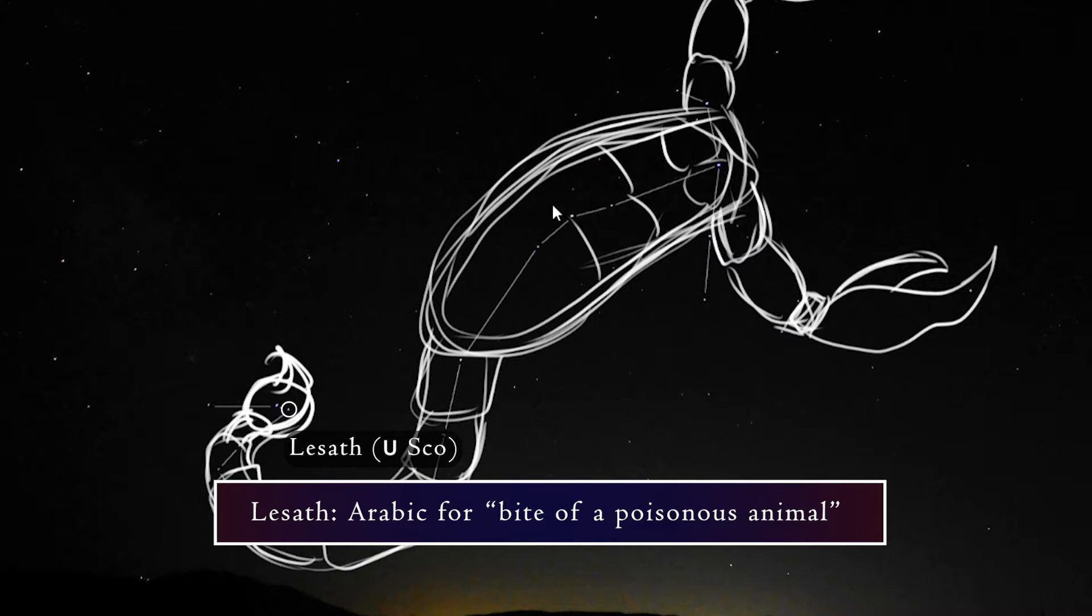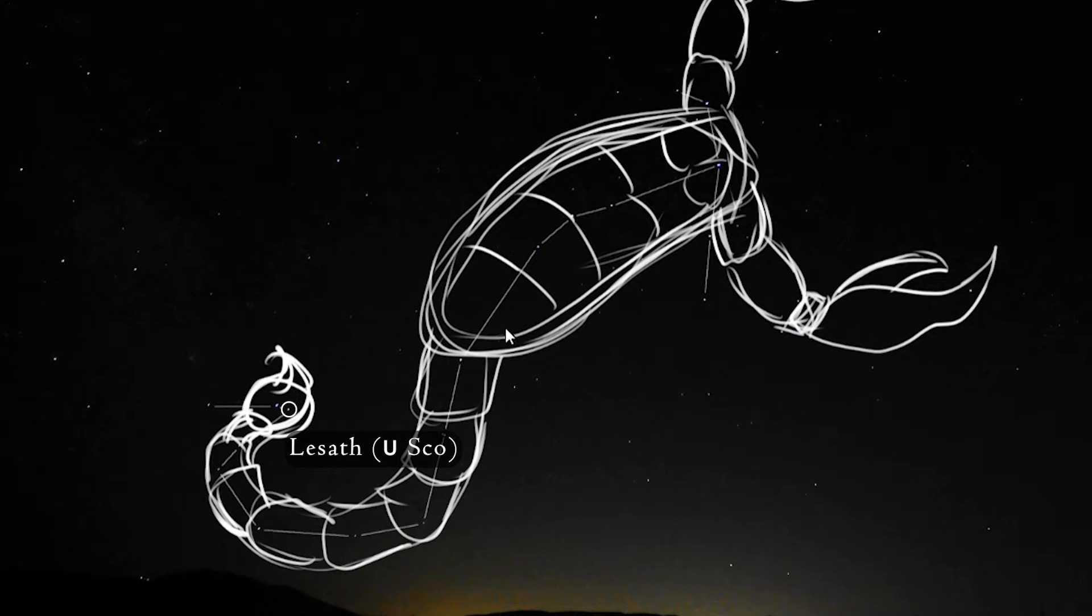Lesath is Arabic for bite of a poisonous animal. It is 590 light years away, and is part of an optical pair. That means it looks like it's really close to another star from our perspective on Earth, but it's really not that close, astronomically speaking.